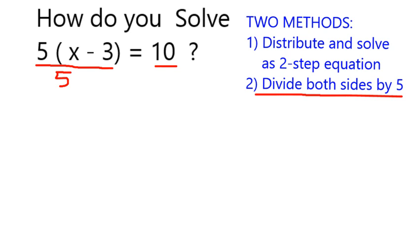Now, because 5 is being multiplied by the whole thing in parentheses, when I cancel it out, that's going to leave me on the left with simply the x minus 3.